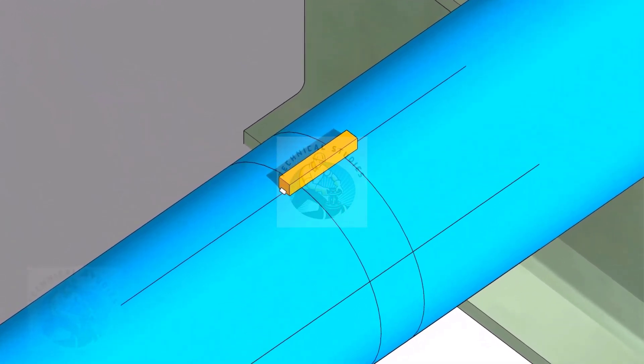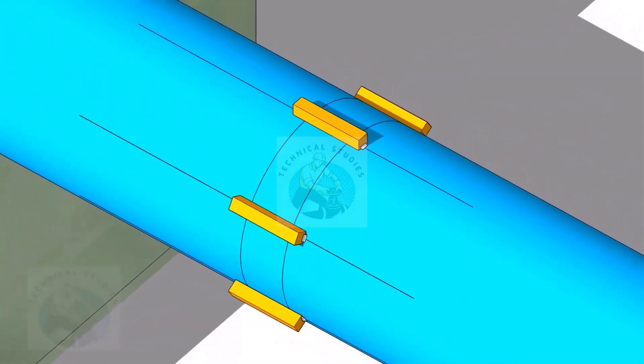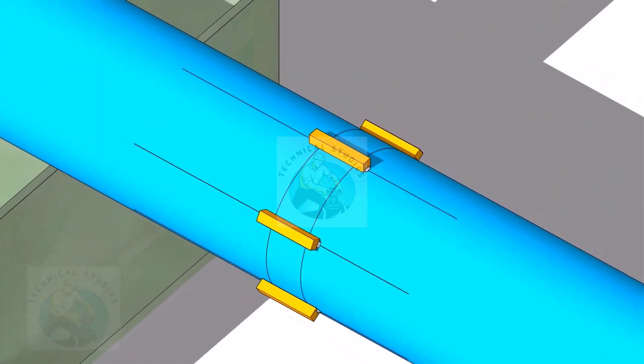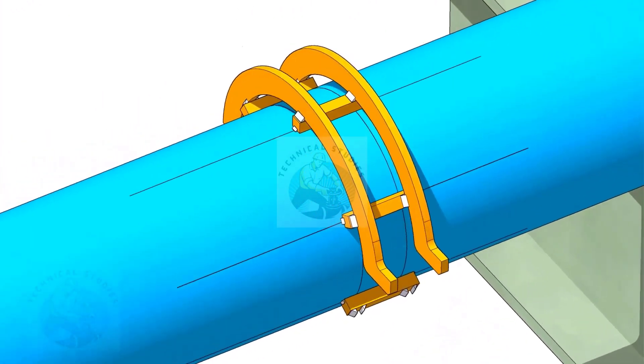Tack weld the square bars on the pipes as shown. Do not weld two big tacks. Tack weld the top half rings carefully on the square bars.